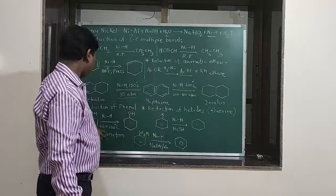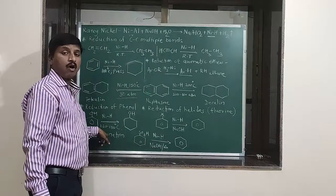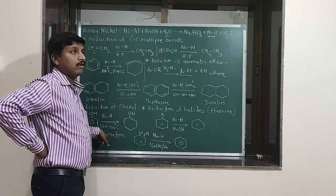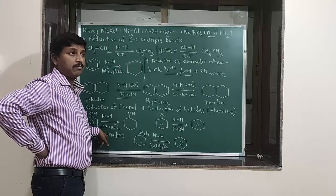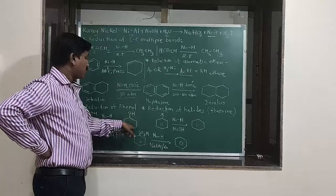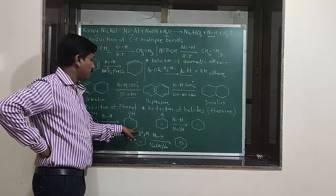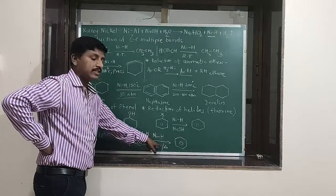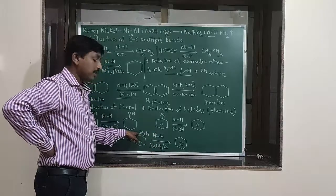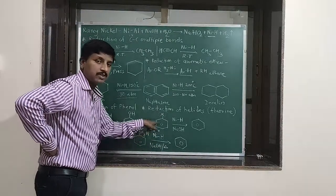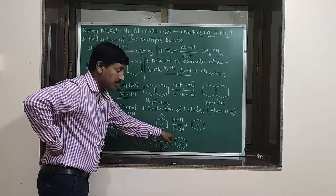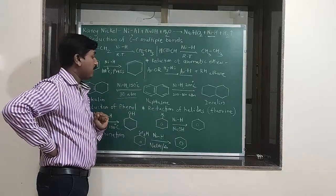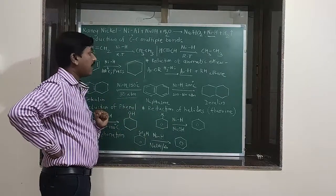The next important application of Raney Nickel is desulfonation. The SO3H group is replaced — that means benzene sulfonic acid gets converted into the corresponding benzene by use of Raney Nickel.